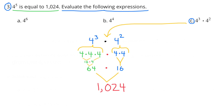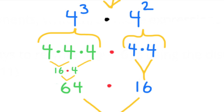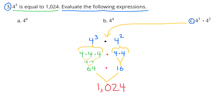C: 4 to the third power times 4 to the second power is the same as 4 to the fifth power, because adding the exponents gives 3 plus 2 equals 5. Breaking it down: 4^3 is 4 times 4 times 4, and 4^2 is 4 times 4 — combined that's five factors of 4. 4 times 4 times 4 times 4 equals 64, and 64 times 16 equals 1024, confirming it equals 4 to the fifth power.